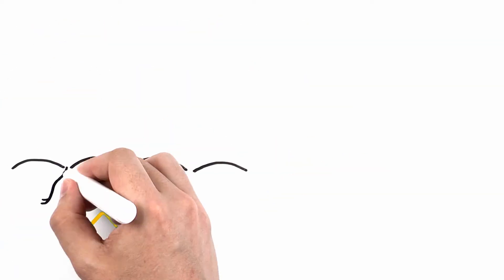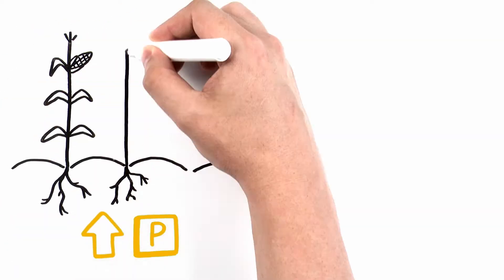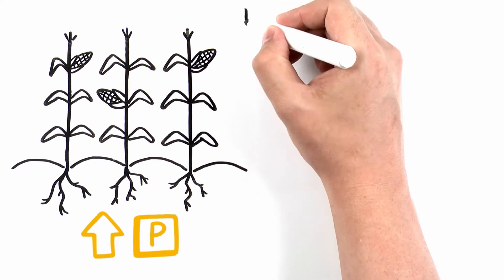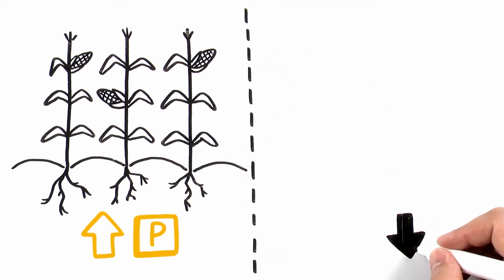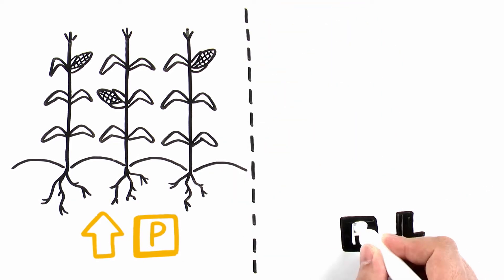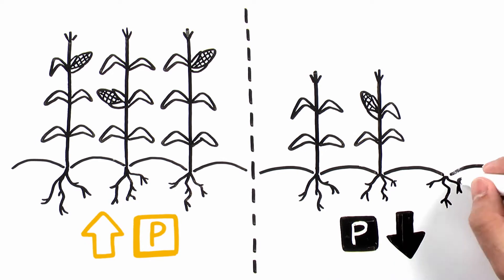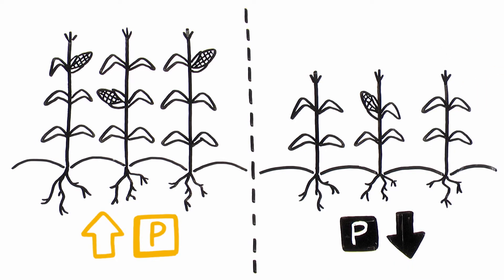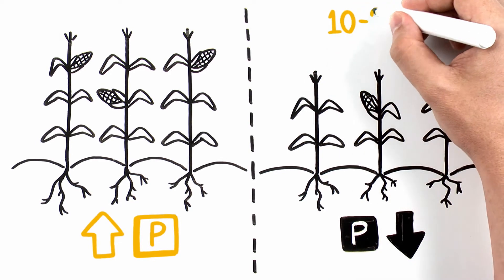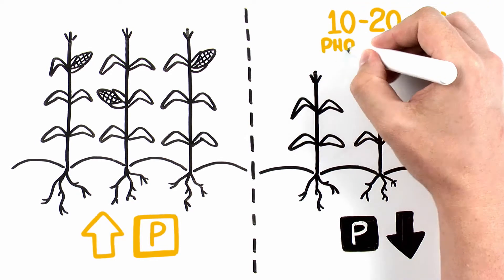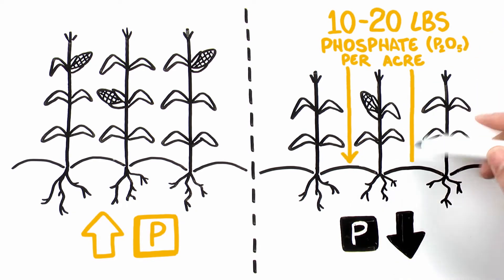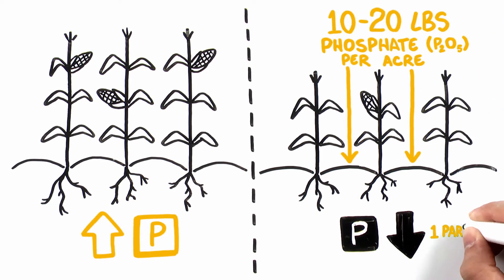High phosphorus soil test levels provide yield maximization, whereas with low soil test levels, yields can be severely limited without phosphorus fertilizer inputs. For many soils, it takes 10 to 20 pounds of phosphate per acre to increase soil test levels by one part per million. In low testing soils, this can be substantially greater.